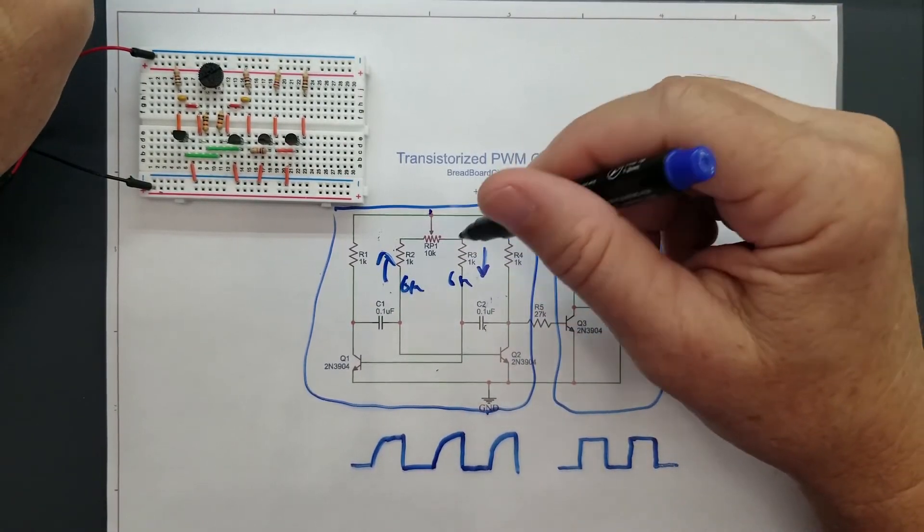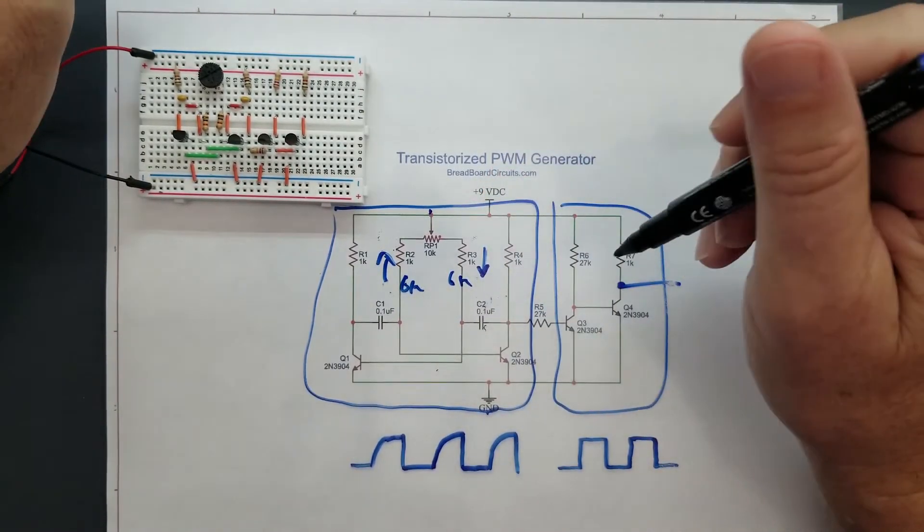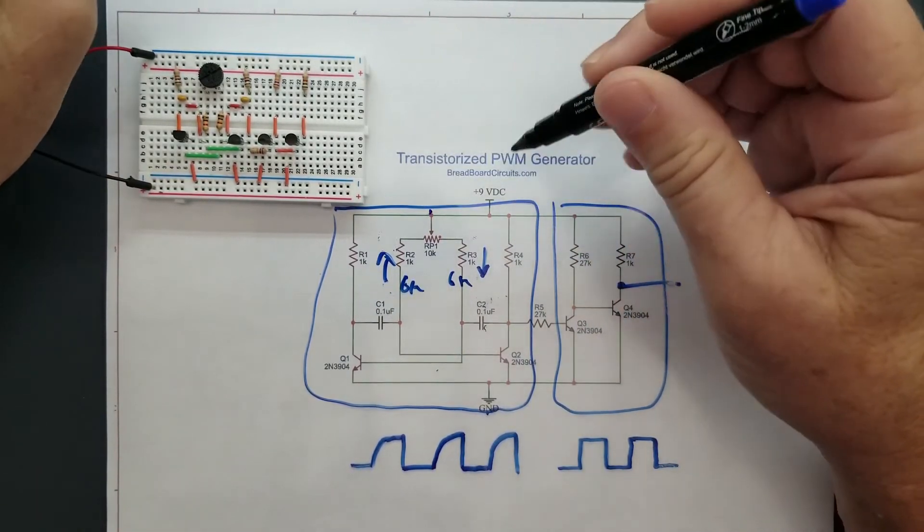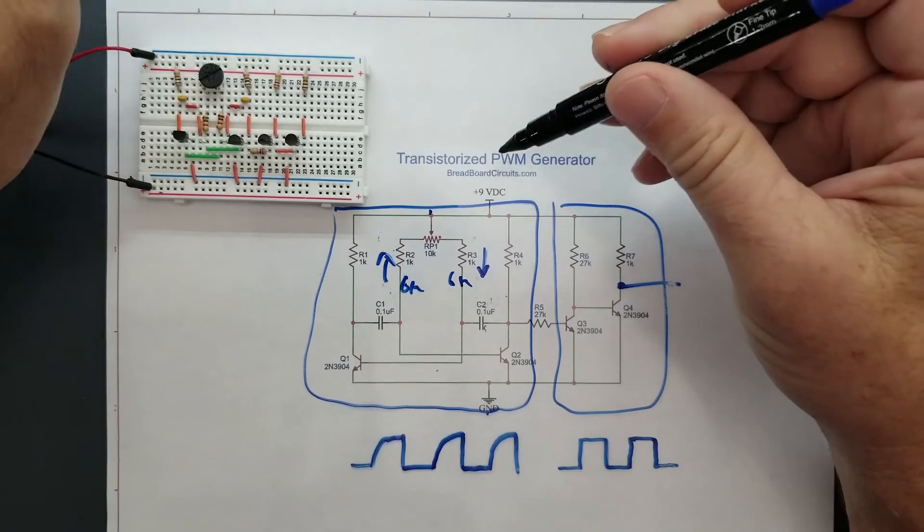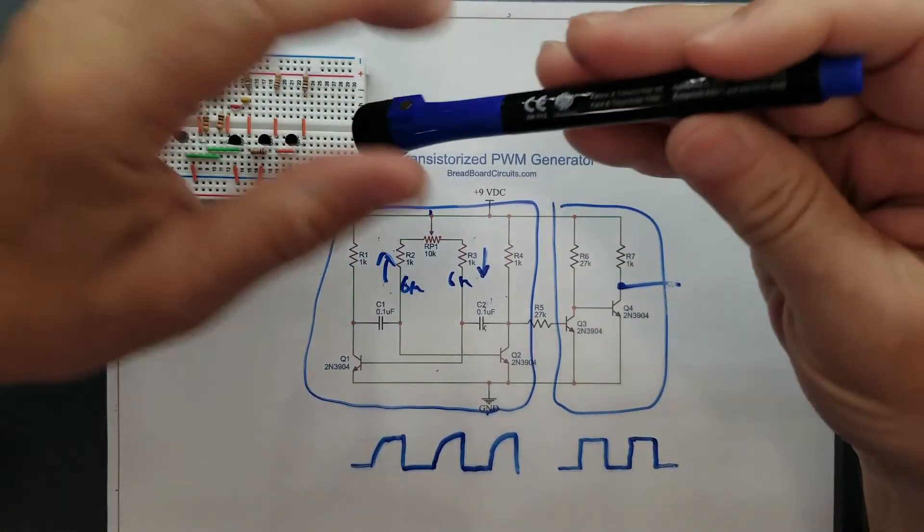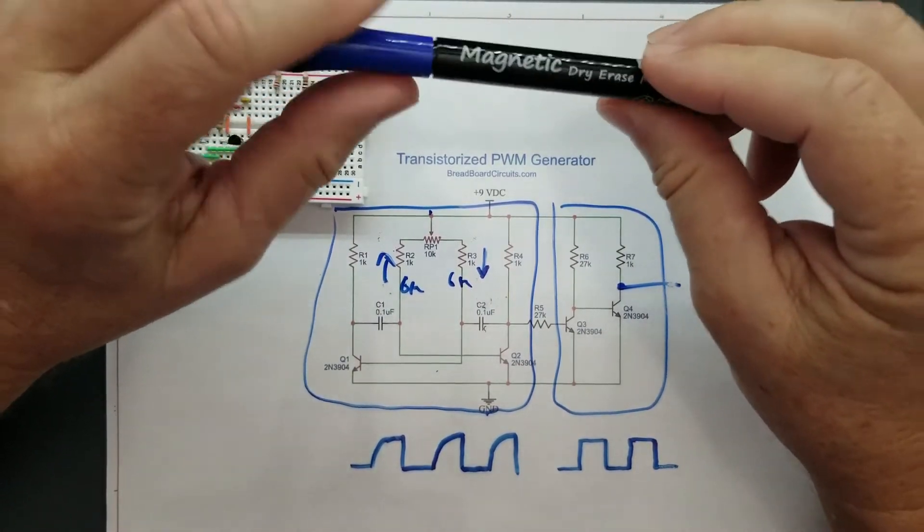What that does is it causes the output to be asymmetrical. And on this one, we're able to get about from a 15% to an 85% duty cycle. It's not 0 to 100%, but this is just a basic 4 transistor PWM circuit, sort of a demo circuit.